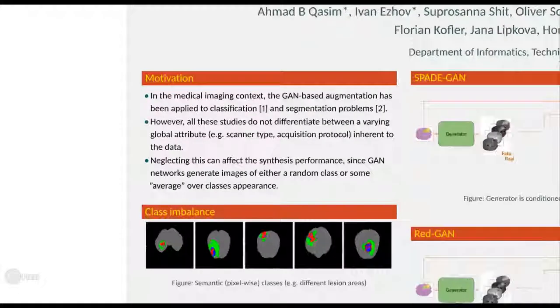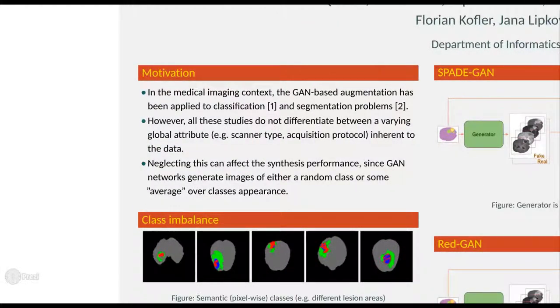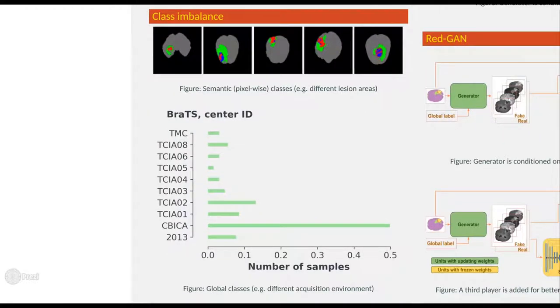Data augmentation using GANs have been employed to mitigate class imbalance in classification and segmentation tasks. In case of segmentation, these studies do cater to semantic classes such as different lesion areas but not global classes such as different acquisition environments.